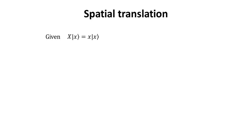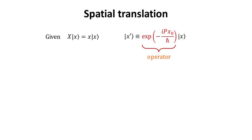Part 1: Spatial Translation. Let's begin with the position operator x, which when acted on the position eigenstate |x⟩, will produce the eigenvalue x multiplied by |x⟩. Now, let's consider an operator as shown, and operate it on the eigenstate |x⟩. The exponential is a unitary operator because p is the momentum operator, which is Hermitian.